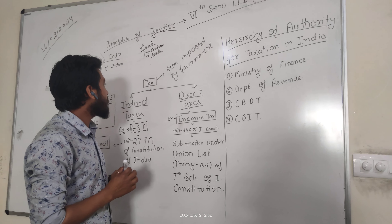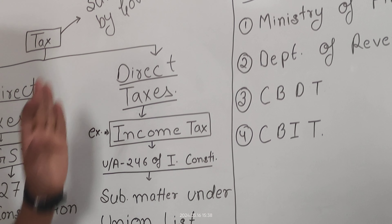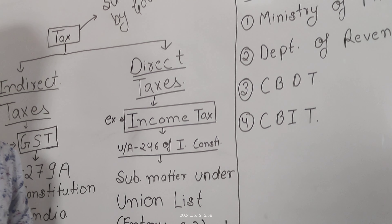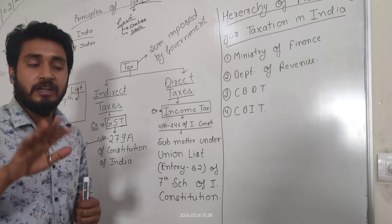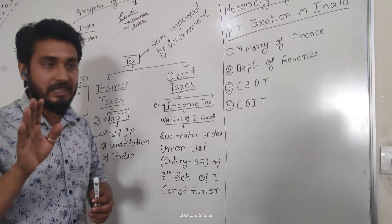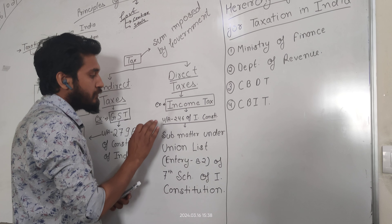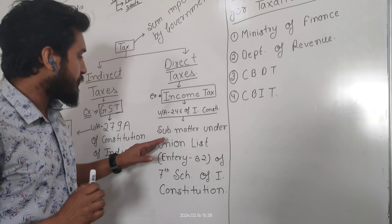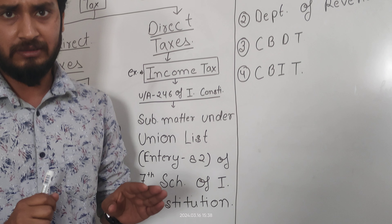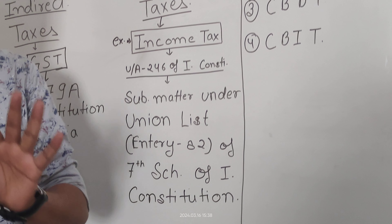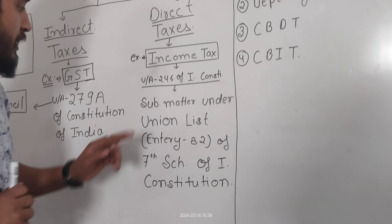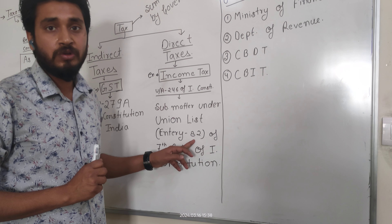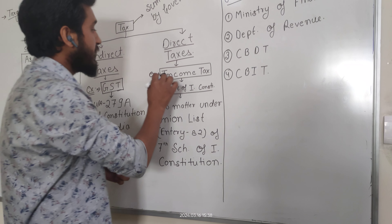Another type of Tax is Direct Tax. The example of Direct Tax is Income Tax. Income Tax has been provided under Article 246 of the Indian Constitution, and it is a subject matter of the Union List. There are 3 lists under the 7th Schedule of the Indian Constitution, and in the 1st list — the Union List — Entry number 82 covers Income Tax.